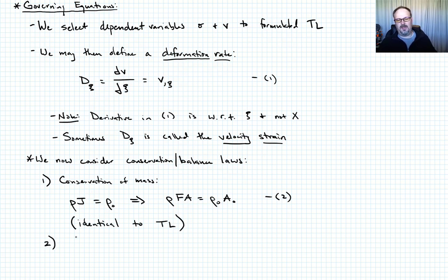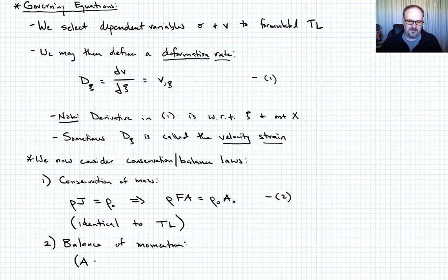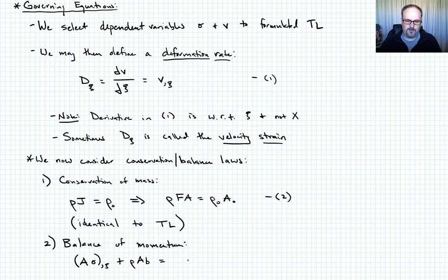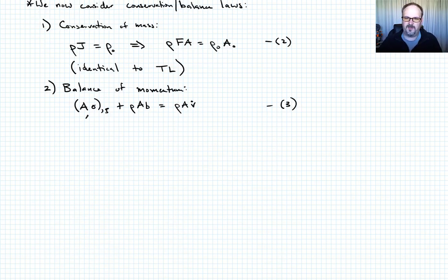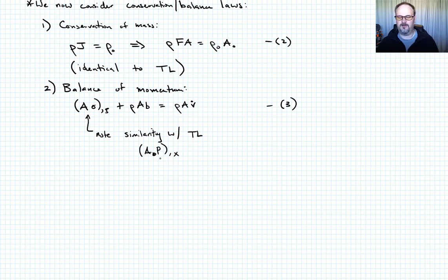For the balance of momentum, we write something similar but with a different stress measure. Now we use the current cross-sectional area A (instead of A-naught), Cauchy stress sigma (instead of P), and take the derivative with respect to c (instead of x). The equation becomes: (sigma A) comma c plus rho A b equals rho A v-dot. Compare this with the total Lagrangian term A-naught times P comma x — just a different derivative and stress measure (equation three).